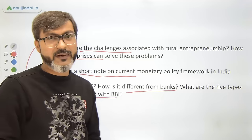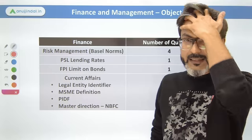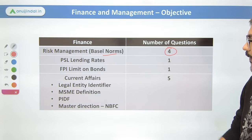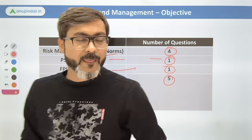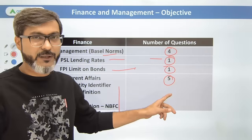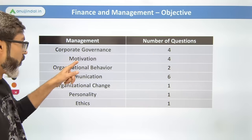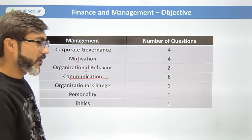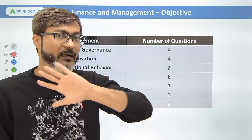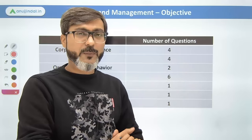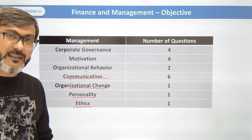In FM objective for 2022, topics from the previous year reduced. Risk management and Basel norms had four questions, PSL lending rate one question, FPI limit on bonds one question, and current affairs from RBI 247 had five questions. In management, they increased the number: corporate governance had four questions, motivation four questions, OB two questions, communication six questions. The most important management topics are communication, motivation, leadership, ethics, and corporate governance.